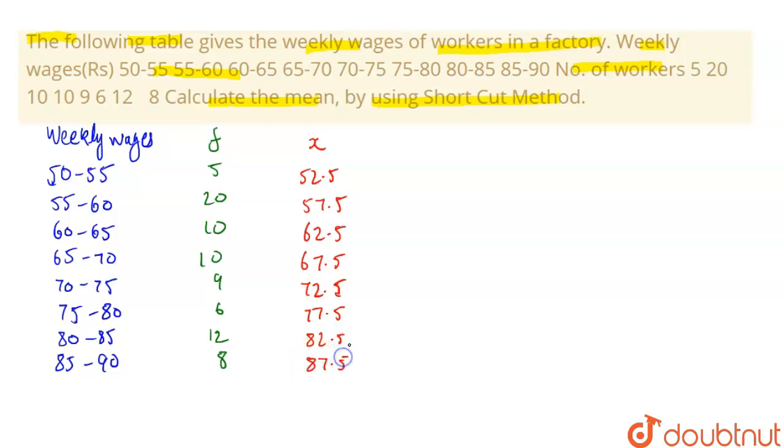So now what we'll do is we will find a column d which equals x minus assumed mean. So first we'll assume any one of these as mean for this table. Let us suppose we assume 72.5 because it is the middle value, so a here is 72.5.